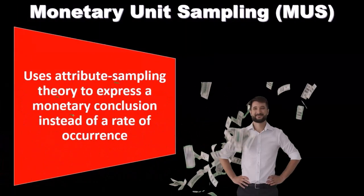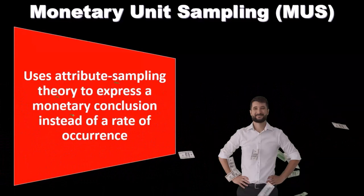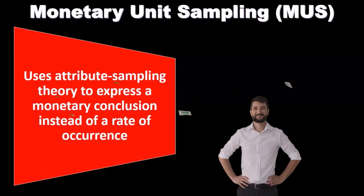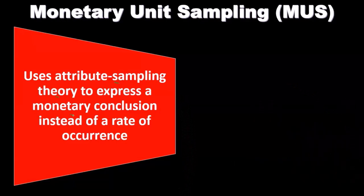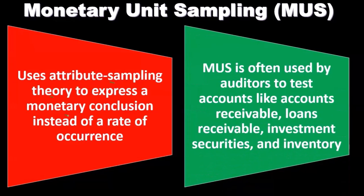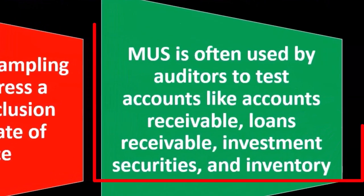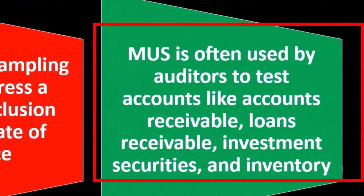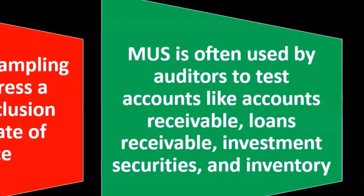When we consider the type of conclusion, we think about what types of tests we would want this type of conclusion — a monetary conclusion as opposed to a rate of occurrence. Monetary unit sampling is often used by auditors to test accounts like accounts receivable, loans receivable, investment securities, and inventory.